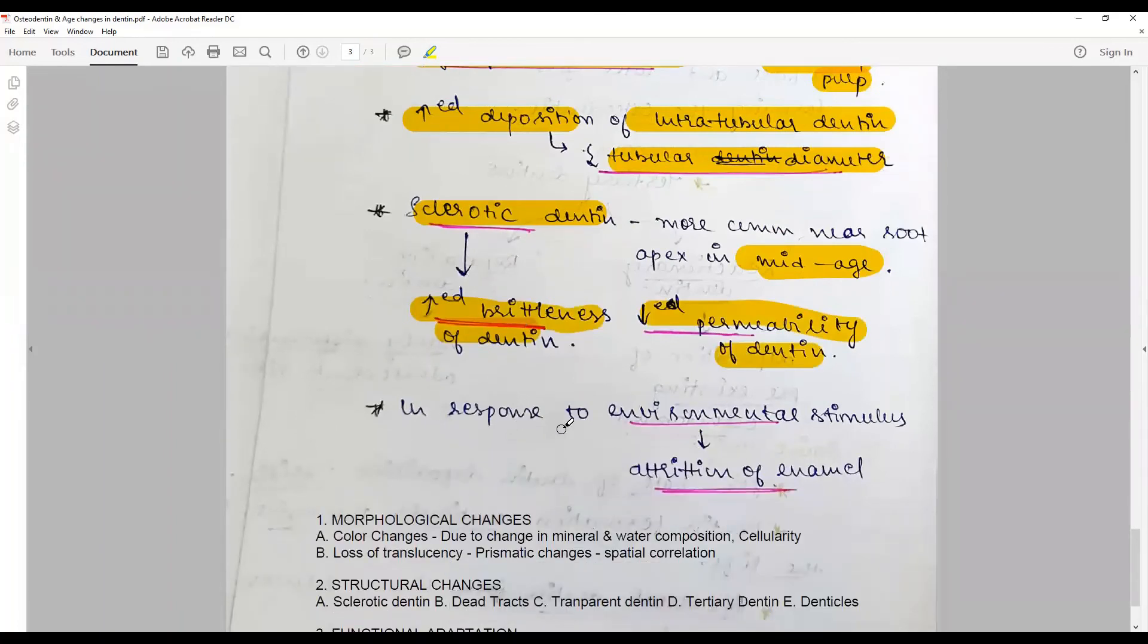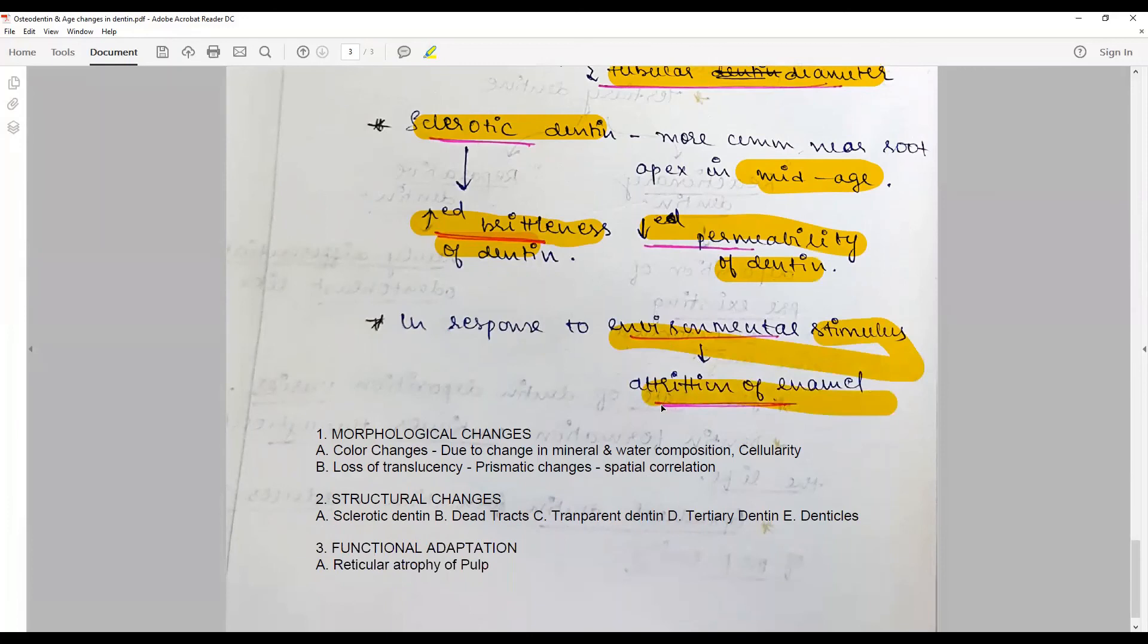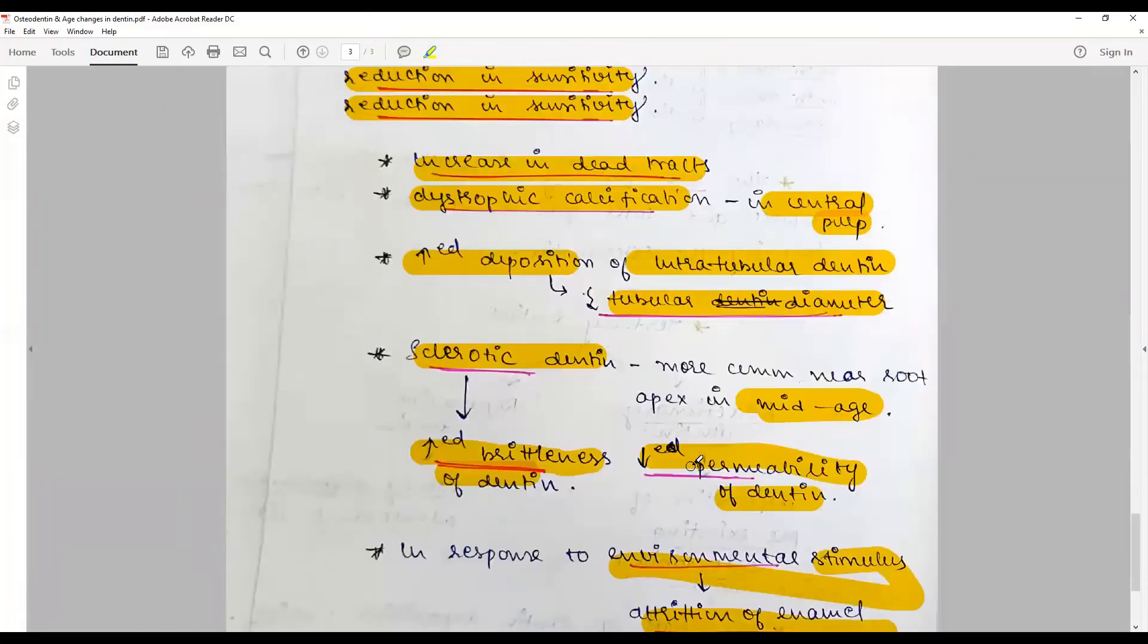This could be in response to environmental stimulus, attrition of enamel, formation of dead tracts. When it is calcified completely, you have transparent dentine. When it is surviving the assaults, you have tertiary dentines and pulp stones.